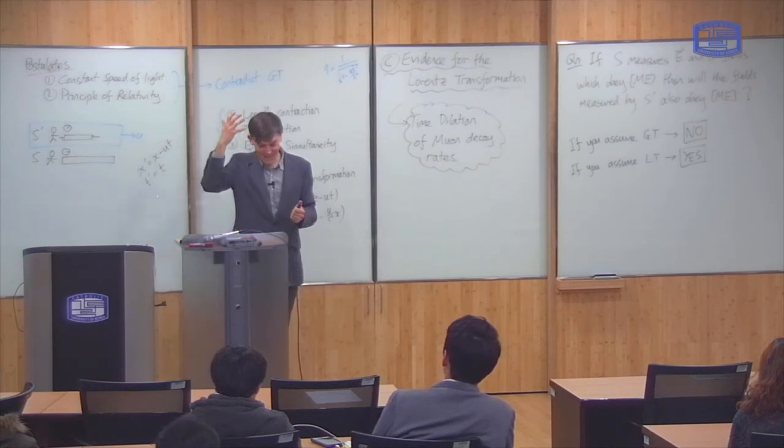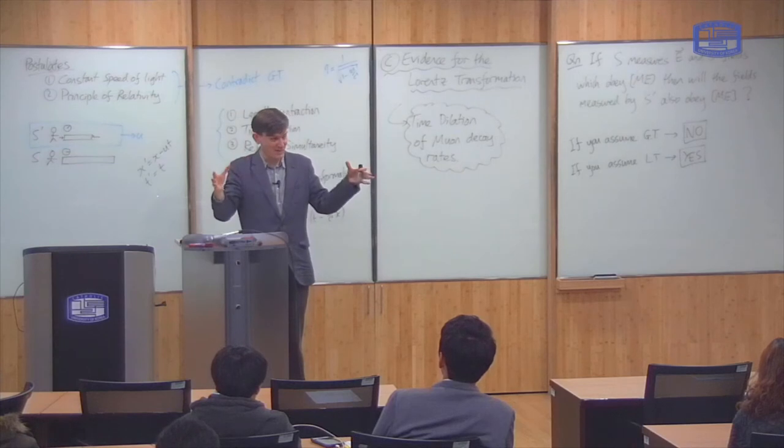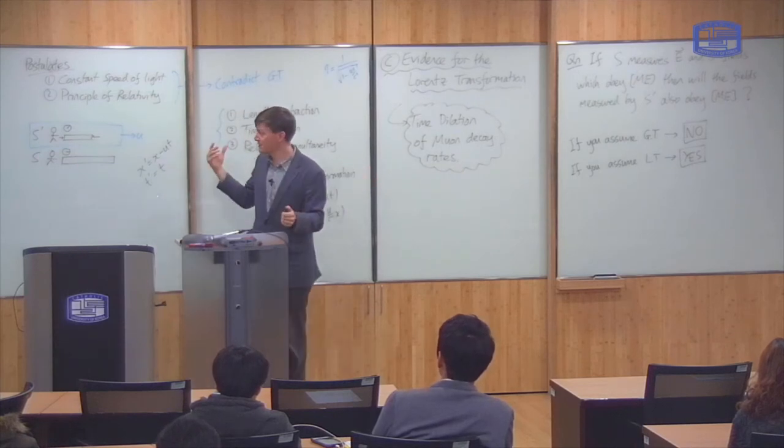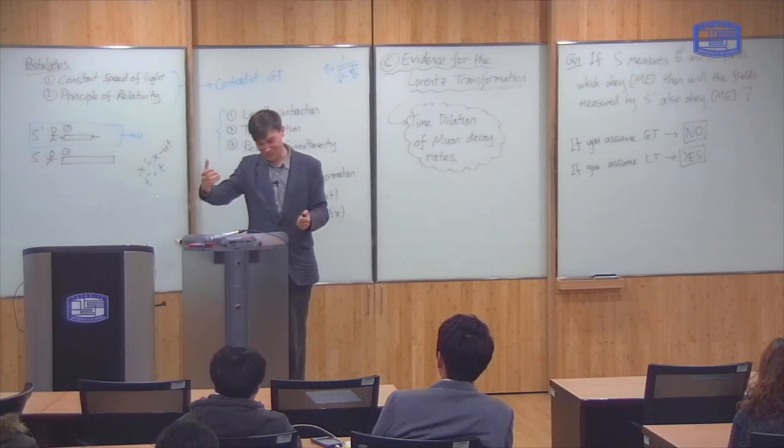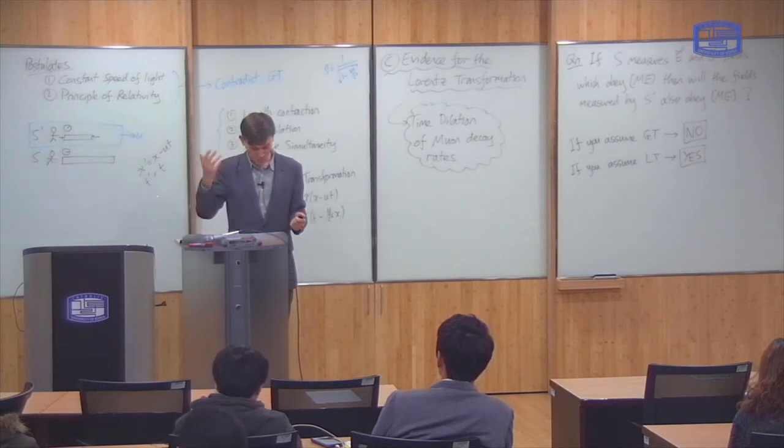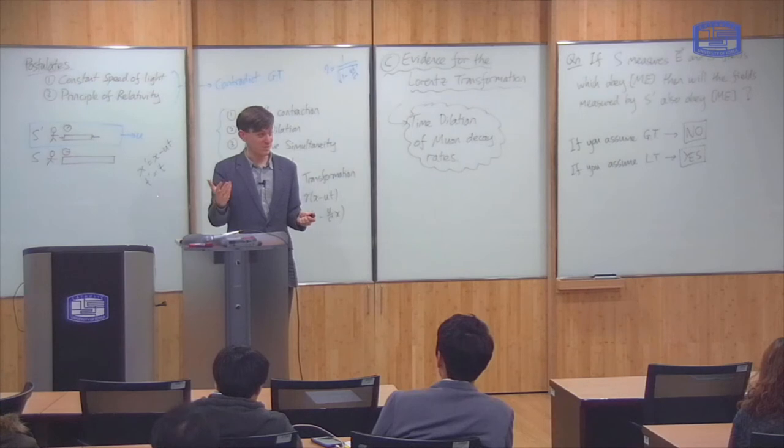So basically, any physical process which has a characteristic time scale can be taken as a clock. And time dilation says that all of these things slow down. So it's not just watches and things that we usually call clocks which slow down. It's all physical processes which slow down.